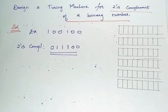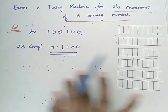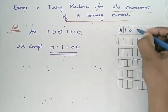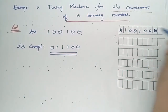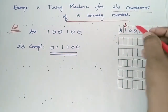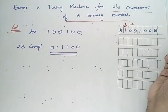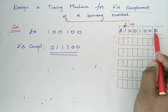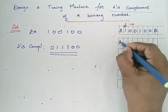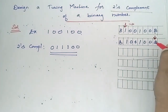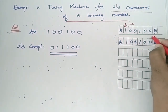Now we are going to implement this in the Turing machine. In the tape, I will have my series like this: 1 0 0 1 0 0 B. My tape header will start moving right until it encounters a blank space. Once it encounters a blank space, it moves left.